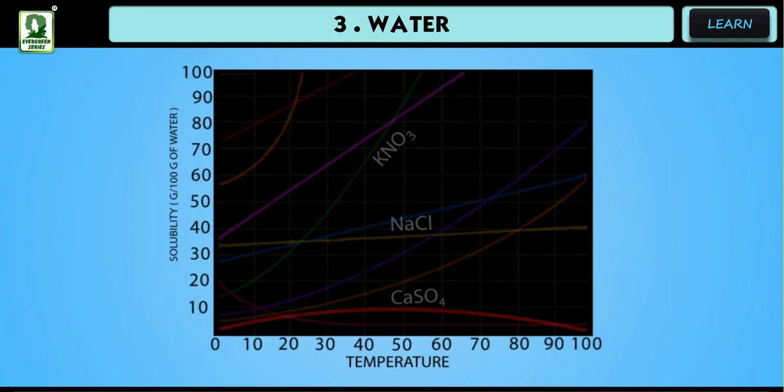From the following curve, it is observed that the solubilities of some substances like sodium chloride increase only a little with the increase in temperature. The solubilities of substances like potassium nitrate and potassium sulphate increase considerably with the increase in temperature.